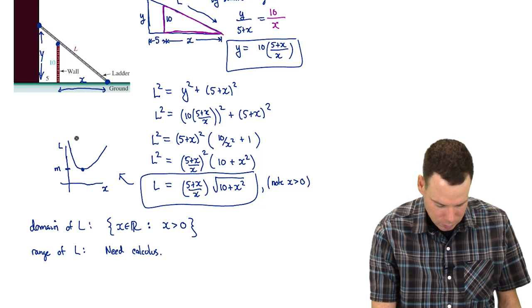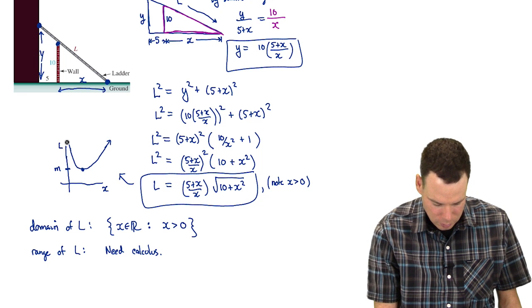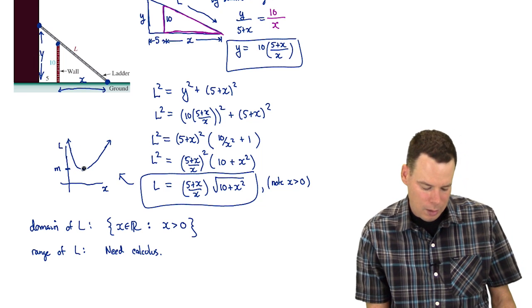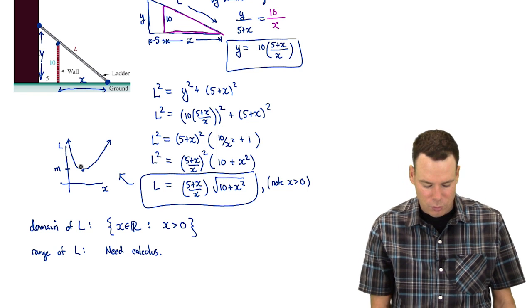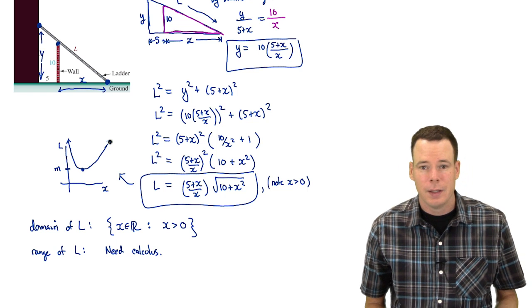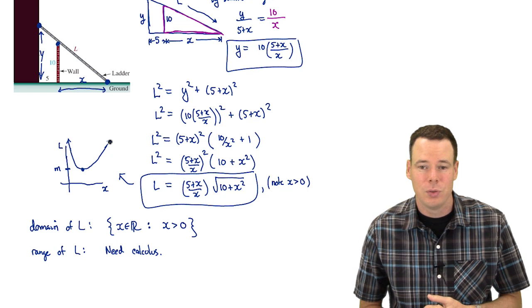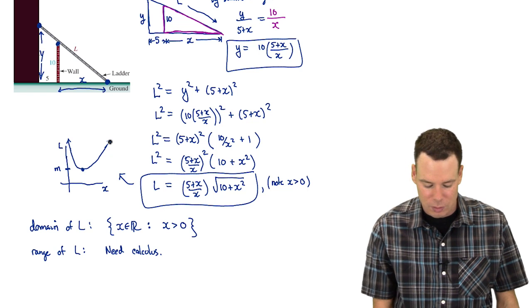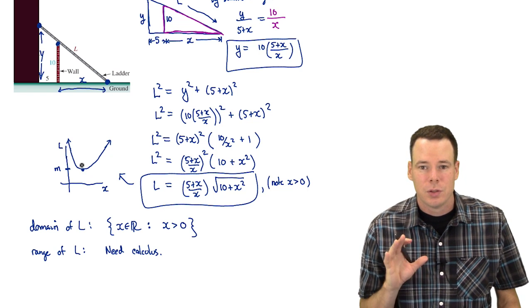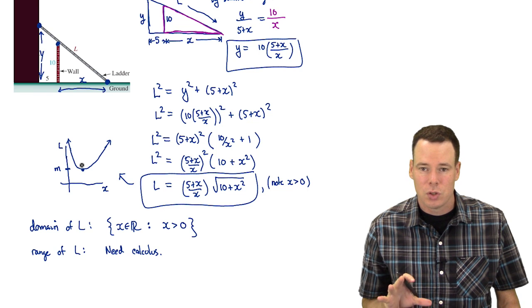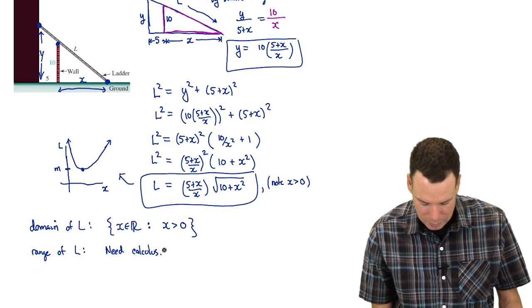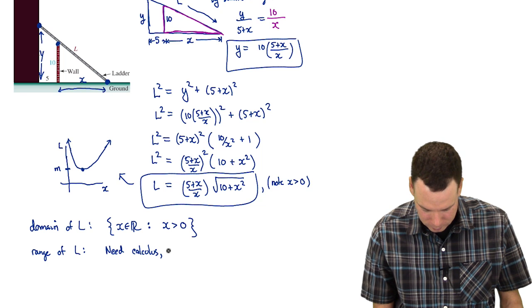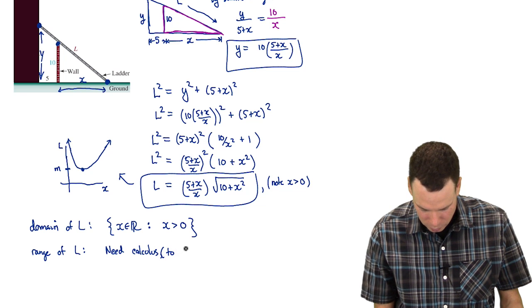Well the range would be whatever this minimum value is here. We'll call it little m. Whatever that minimum value is, the range would be anything bigger than or equal to that minimum value. So I need to know what the minimum value this function takes on and that's what calculus is particularly suited for. It's for solving problems involving optimization. Where is it minimum?